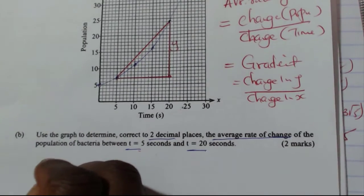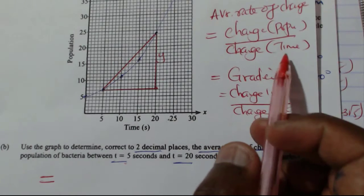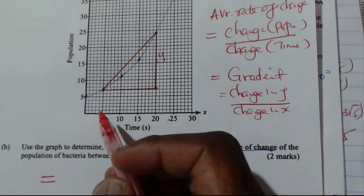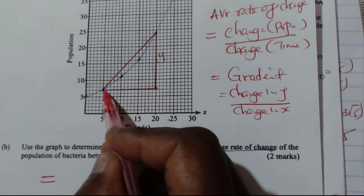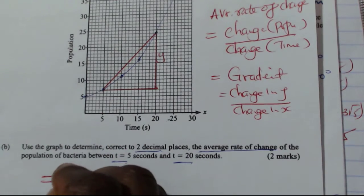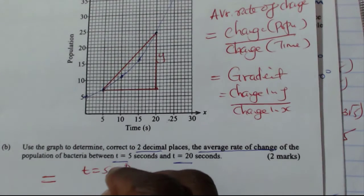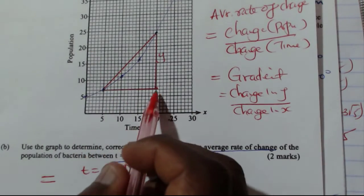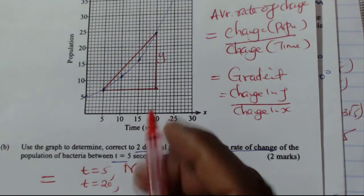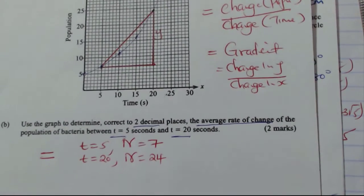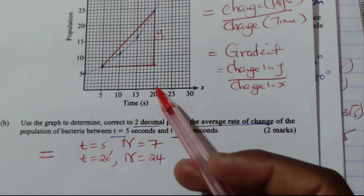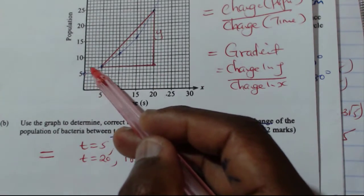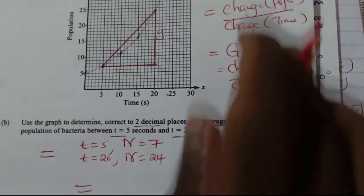So this is what you're supposed to do. So the change, the average rate of change will be given by the change in population when T equals 5. When T equals 5, the number of bacteria is given by 7. Then when T equals 20, the number of bacteria is 24. From the graph, you see that T equals 20, this is 24. Then when T equals 5, the number of bacteria is 7. So the average rate of change now, this is how you're going to do it very fast.